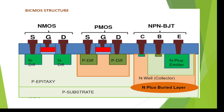On the left side, using the P-substrate, the NMOS transistor is designed and on the right side, the PMOS transistor is designed. Further to the right is the new area for bipolar technology — the emitter, base, and collector terminals. This uses the same N-well and P-well process as CMOS fabrication, with one additional bipolar transistor designed on the right side.